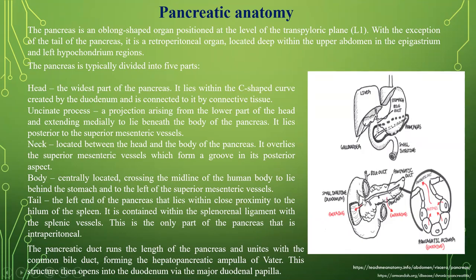The body is centrally located, crossing the midline to lie behind the stomach and to the left of the superior mesenteric vessels. The tail is the left end of the pancreas, lying in close proximity to the hilum of the spleen, contained within the splenorenal ligament with the splenic vessels. This is the only part of the pancreas that is intraperitoneal. The pancreatic duct runs the length of the pancreas and unites with the common bile duct, forming the hepatopancreatic ampulla of Vater, which opens into the duodenum via the major duodenal papilla.